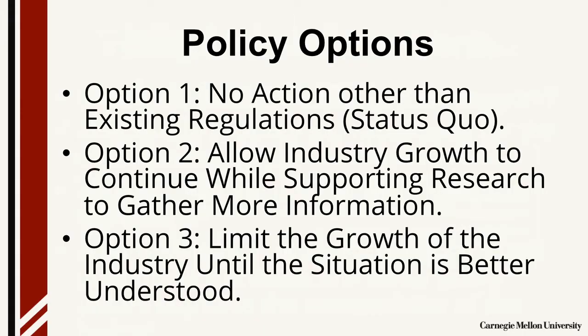Going back to our 3D printing scenario, here are three possible options put together by one of my former students. The first option is always the status quo — no additional action beyond existing regulations that already focus on energy and environmental aspects of the technology. For example, there are already regulations that are part of the Occupational Health and Safety Administration that focus on workers breathing hazardous substances. As mentioned in an earlier video, this is often the option picked in the end. The second option would be to allow industry growth while supporting more research and information gathering, and the third option would be to limit industry growth until the situation is better understood.